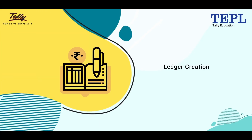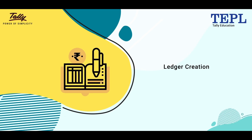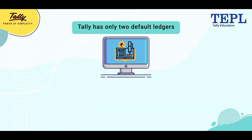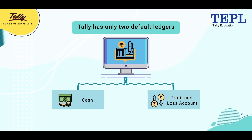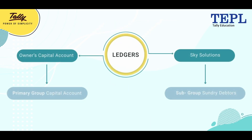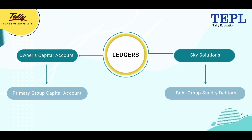Now in this section, you will be introduced to the topic of ledger creation. Tally has only two default ledgers: Cash and Profit and Loss Account. Hence, the creation of ledgers is necessary for recording transactions that involve other ledger accounts. The ledgers which must be created are Owner's Capital Account and Sky Solutions.